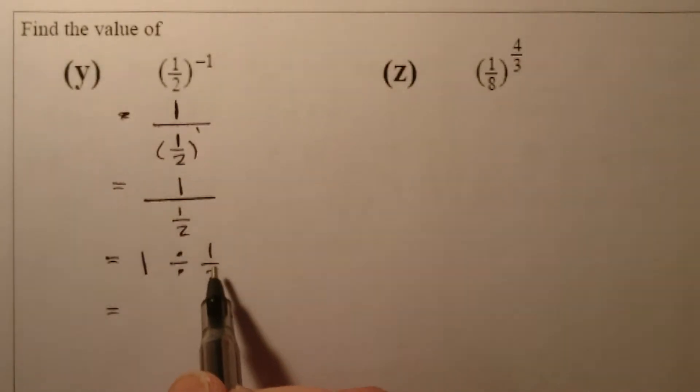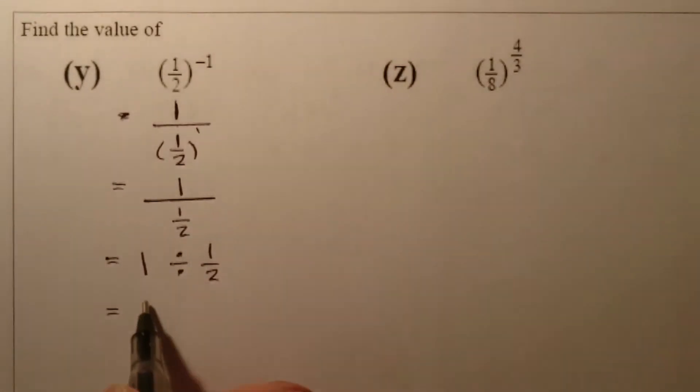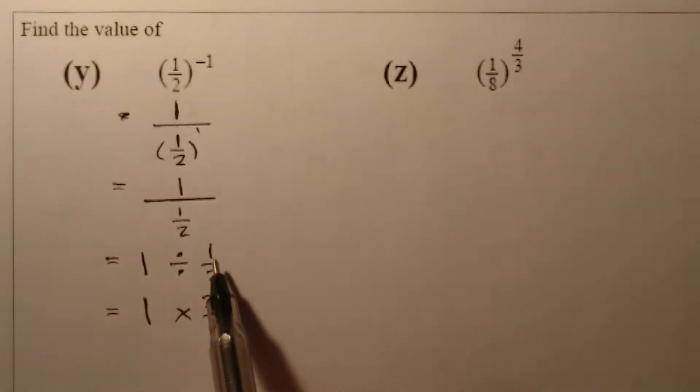If you think about how we do that type of work, what we do is we flip over the second fraction and we change the divide sign to times. So I've got one, I'm going to flip and change it, or you take the reciprocal of the second fraction and you change the divide to a multiplying sign.